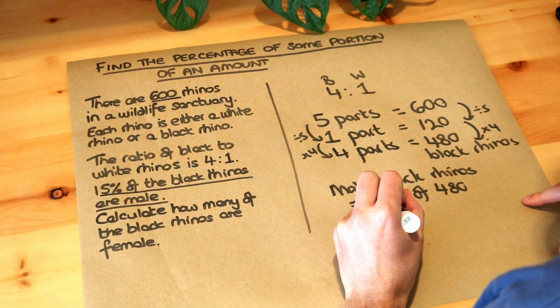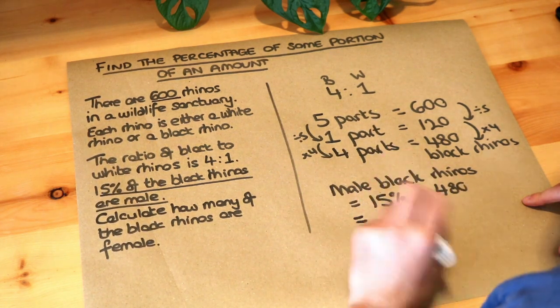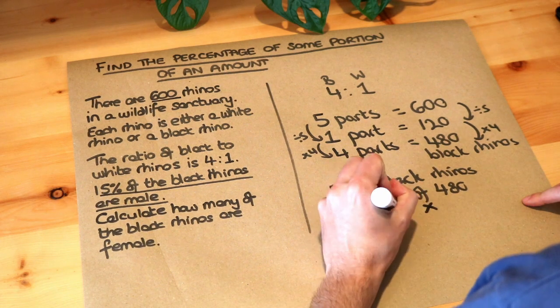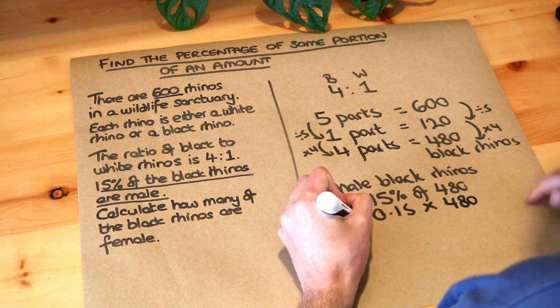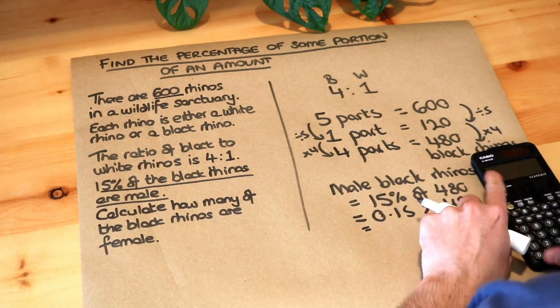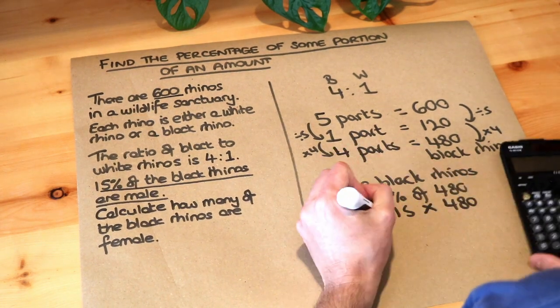And then we can change of into times and 15% as a decimal is 0.15. And then if I do that on my calculator, that's 72.